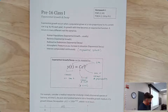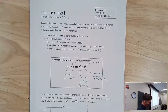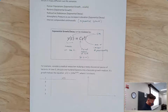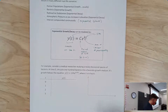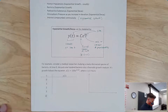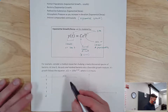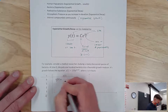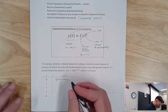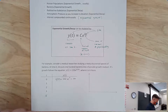Consider a medical researcher studying a newly discovered species of bacteria. At time zero, there are 100 bacteria in a favorable growth medium, and the growth follows y(t) = 100·e^(0.25t), where t is in hours. At t=0 we get 100·e^0 = 100, confirming the C value equals 100.